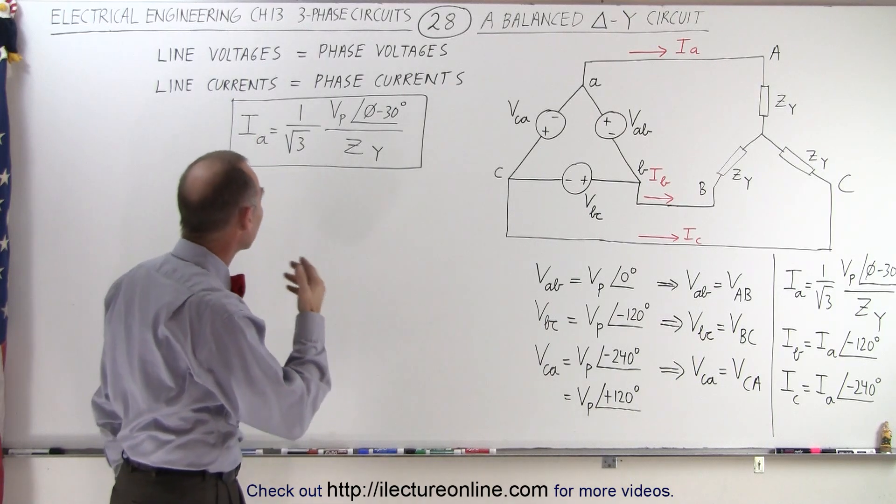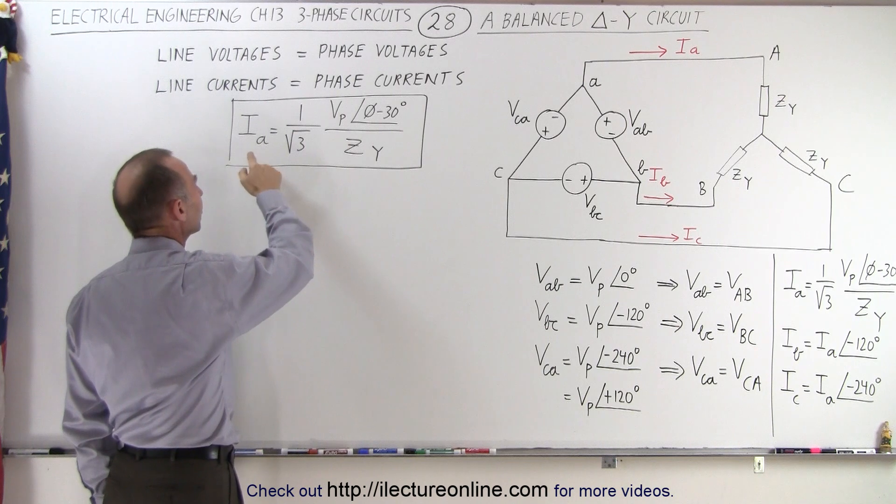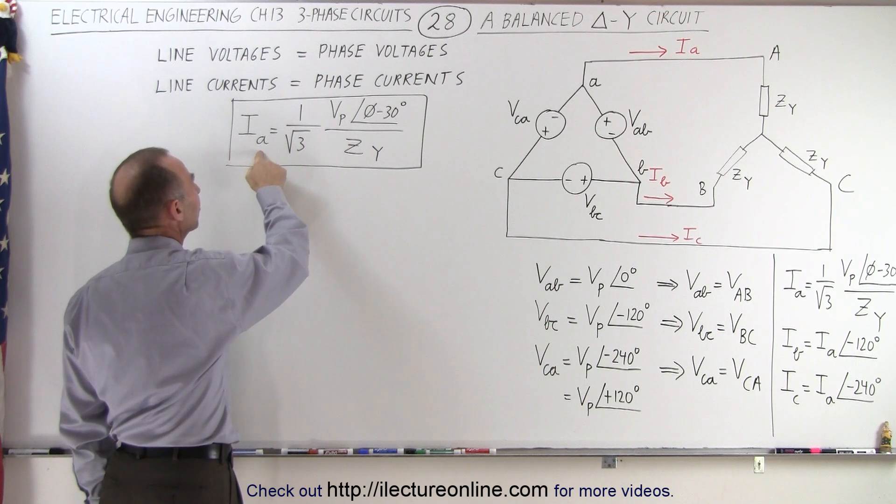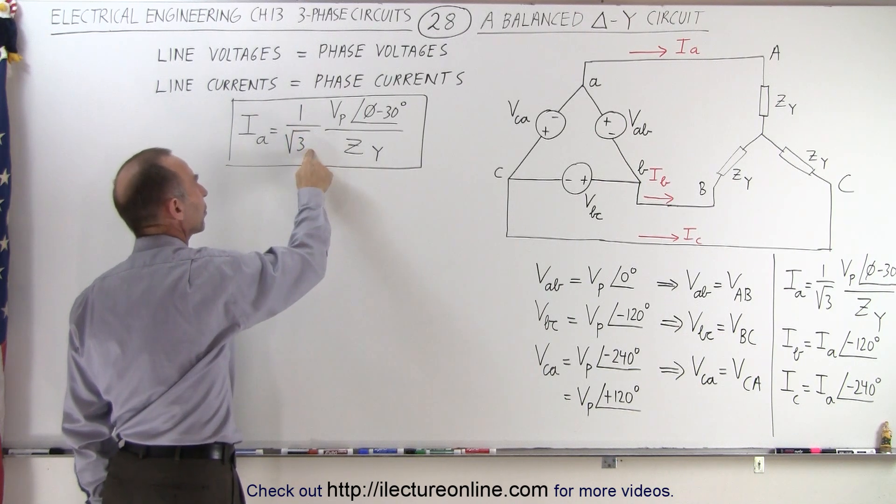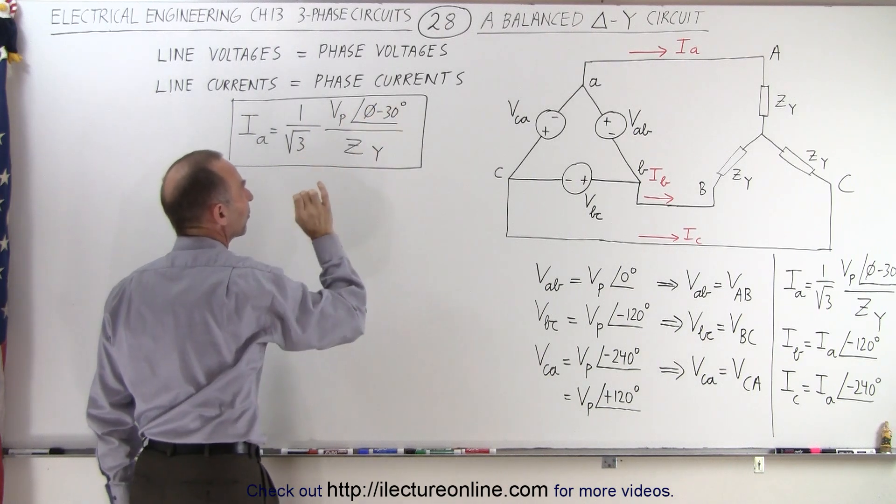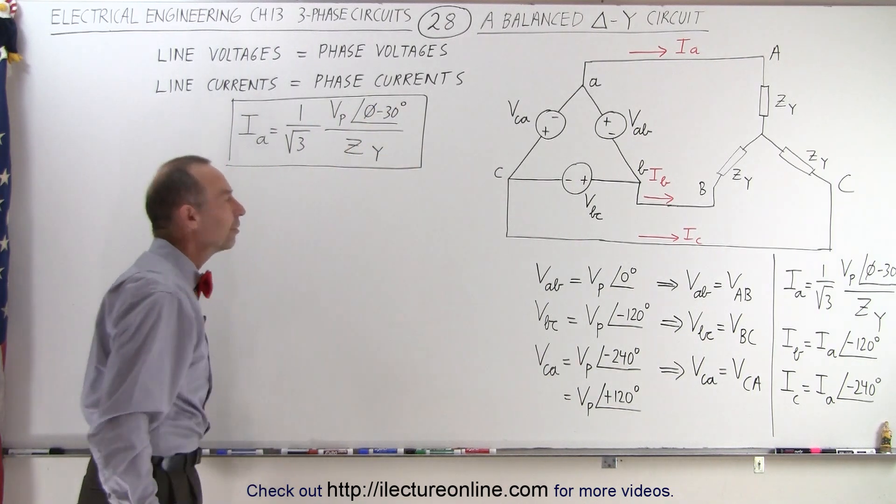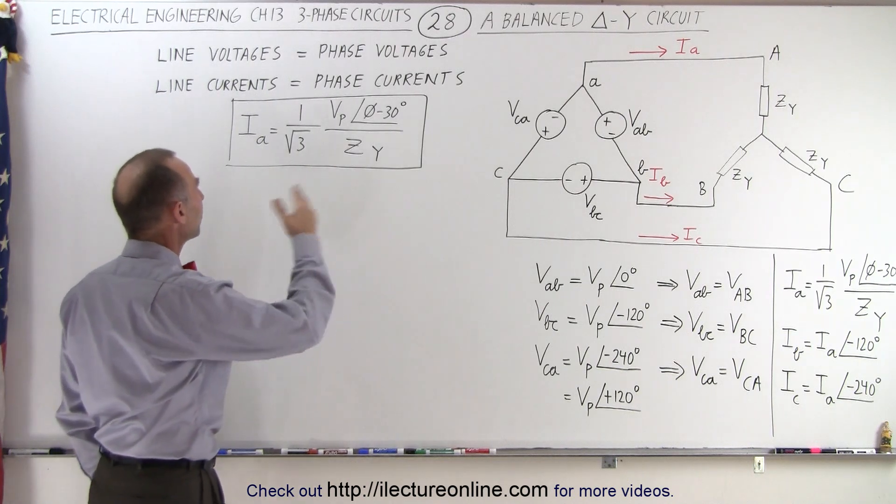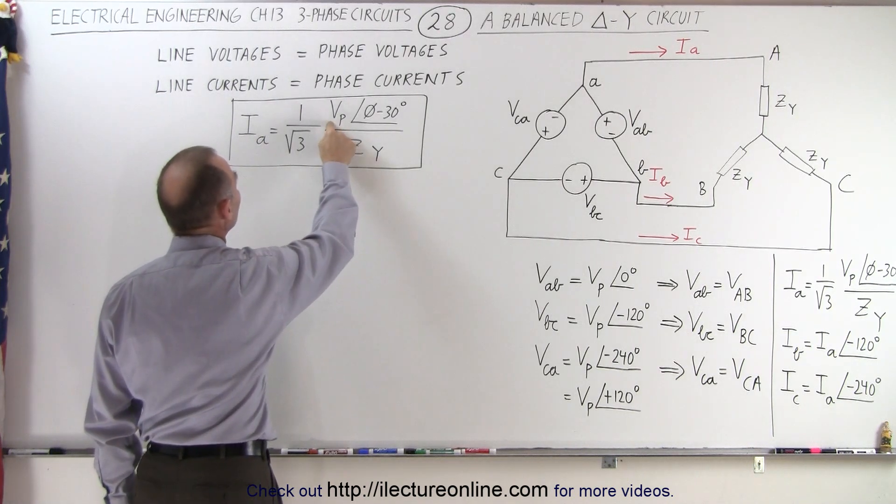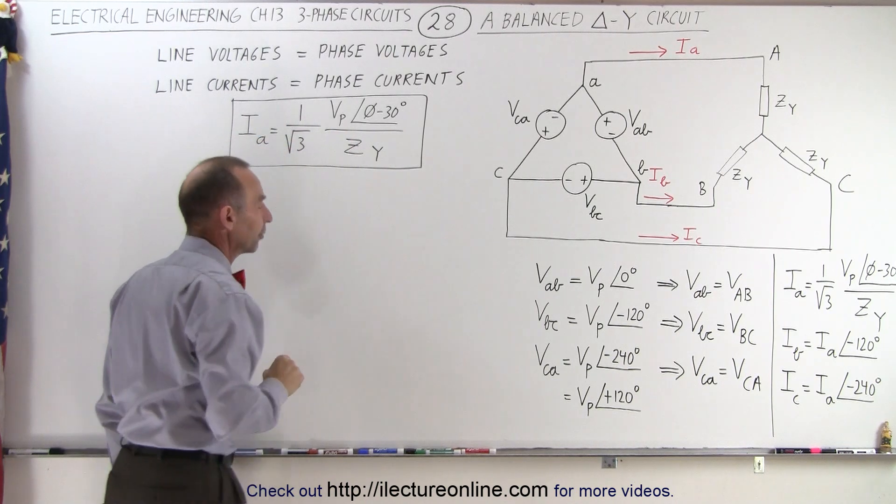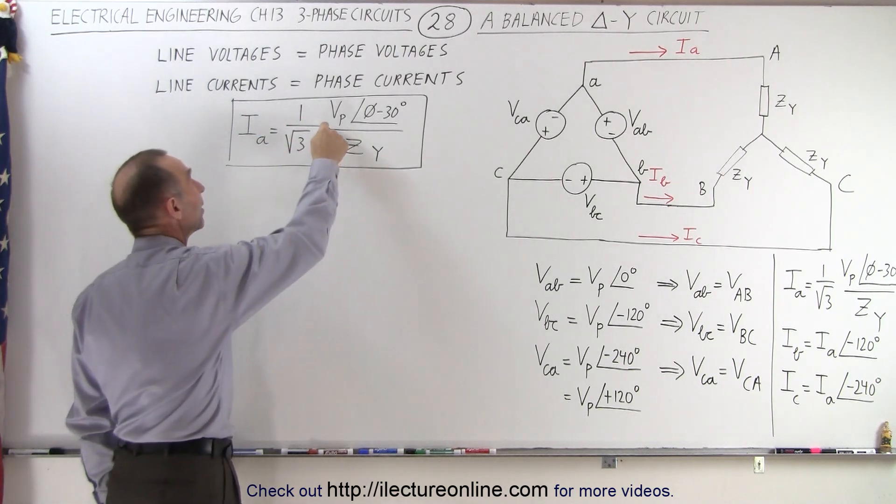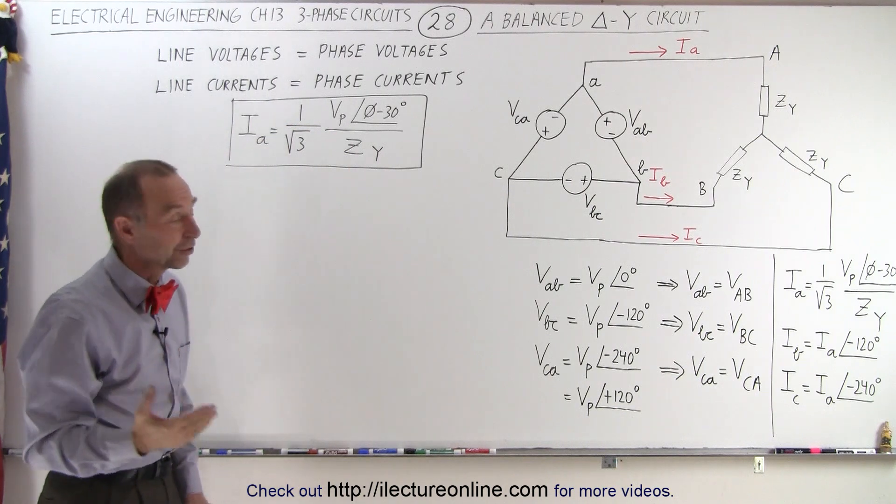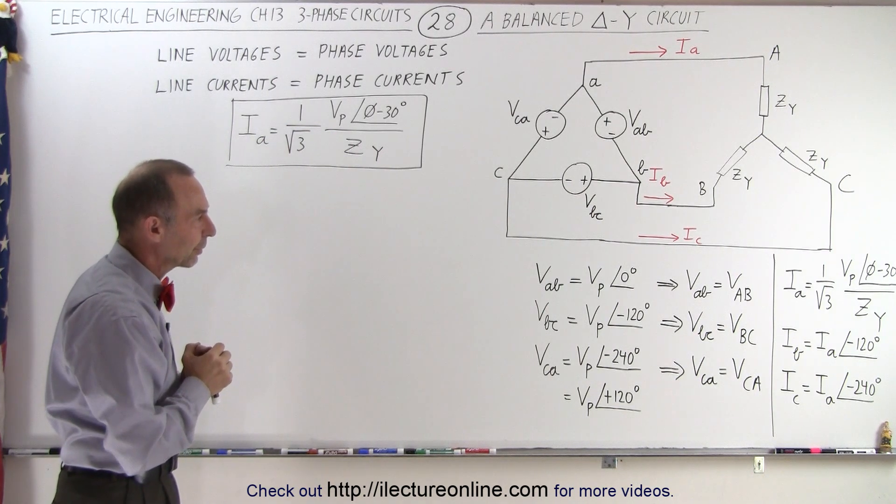But to calculate the line current, it can be done in such a way that the results end up being IA is equal to 1 over the square root of 3 times the phase voltage with a phase angle difference of 30 degrees and divided by the impedance of the load. Notice there is going to be a difference in the phase between the phase voltage and the line current, or between the line voltage and the line current. There's going to be a difference of 30 degrees in this configuration.